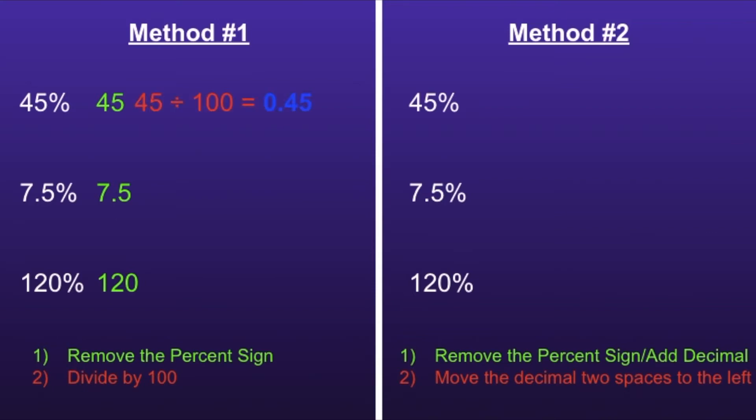45 divided by 100 equals 0.45. 7.5 divided by 100 equals 0.075. 120 divided by 100 equals 1.2. And it's just that simple.